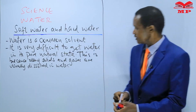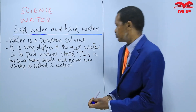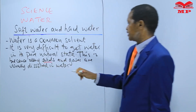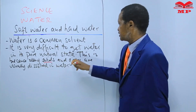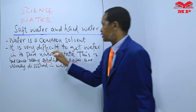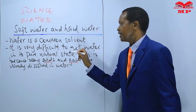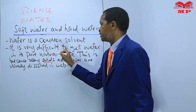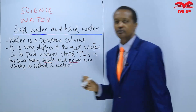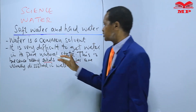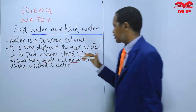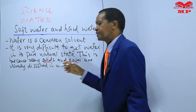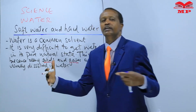I'm going to explain how solids and gases get dissolved in water, thereby losing the pure natural state of water. The pure natural state of water is lost because of the many solids and gases that get dissolved in it.